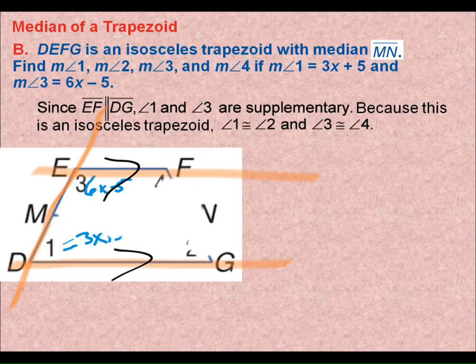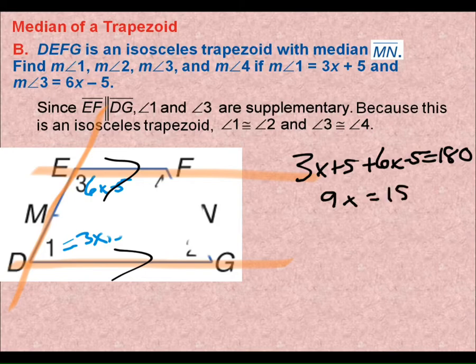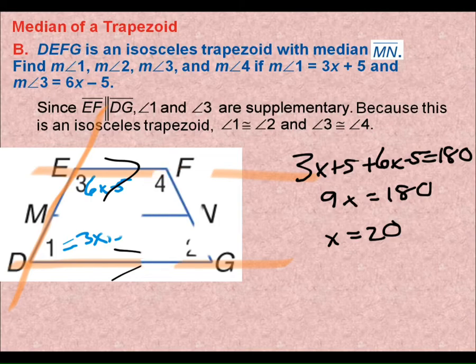Which means add to 180. So I know that 3X plus 5 plus 6X minus 5, that's equal to 180. Add my like terms together. I get 9X equals 180. 3X plus 6X. 5 minus 5 is 0. Divide both sides by 9. X is 20. So we'll go back to this problem.